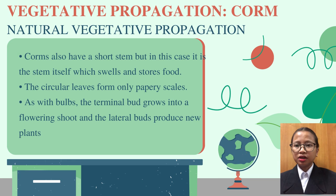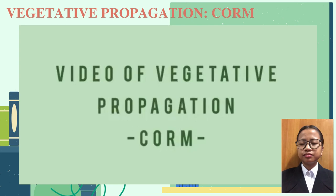In natural vegetative propagation, corms have a short stem where the stem itself swells and stores food. The scale leaves form only a papery scale. As with bulbs, the terminal bud grows into a flowering shoot and the lateral buds produce new plants. As we can see in this video, this is called a corm.